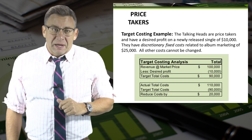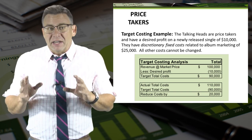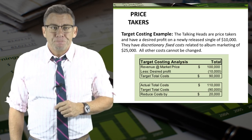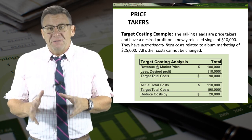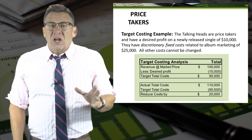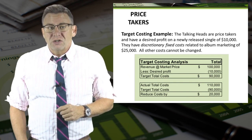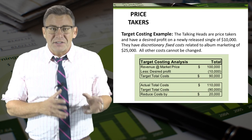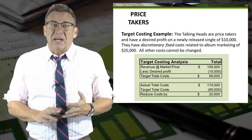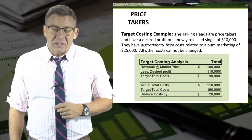Let's look at an example. The Talking Heads are price takers and have a desired profit on a newly released single of $10,000. They have discretionary fixed costs related to album marketing of $25,000, and all other costs cannot be changed. Target costing analysis shows that the target cost is less than the actual cost, so the Talking Heads would either need to accept a lower desired profit and/or cut discretionary fixed costs.